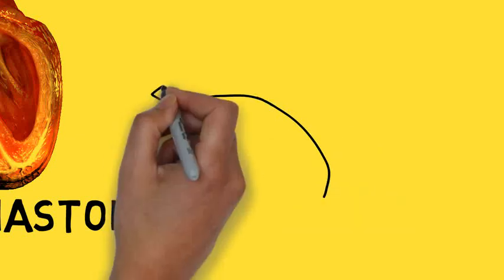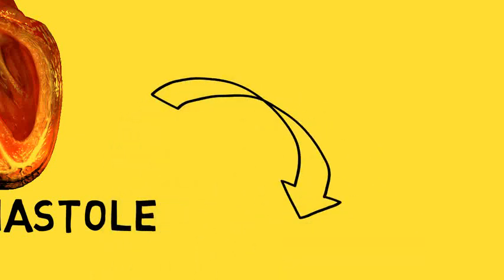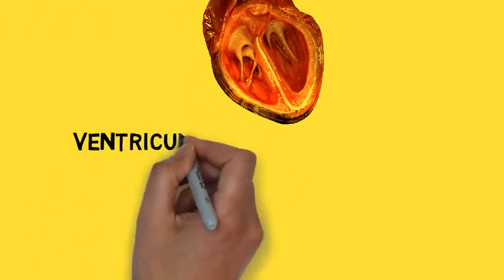Then when the blood reaches the ventricles, the ventricles start to contract. That's the first stage of ventricular systole.